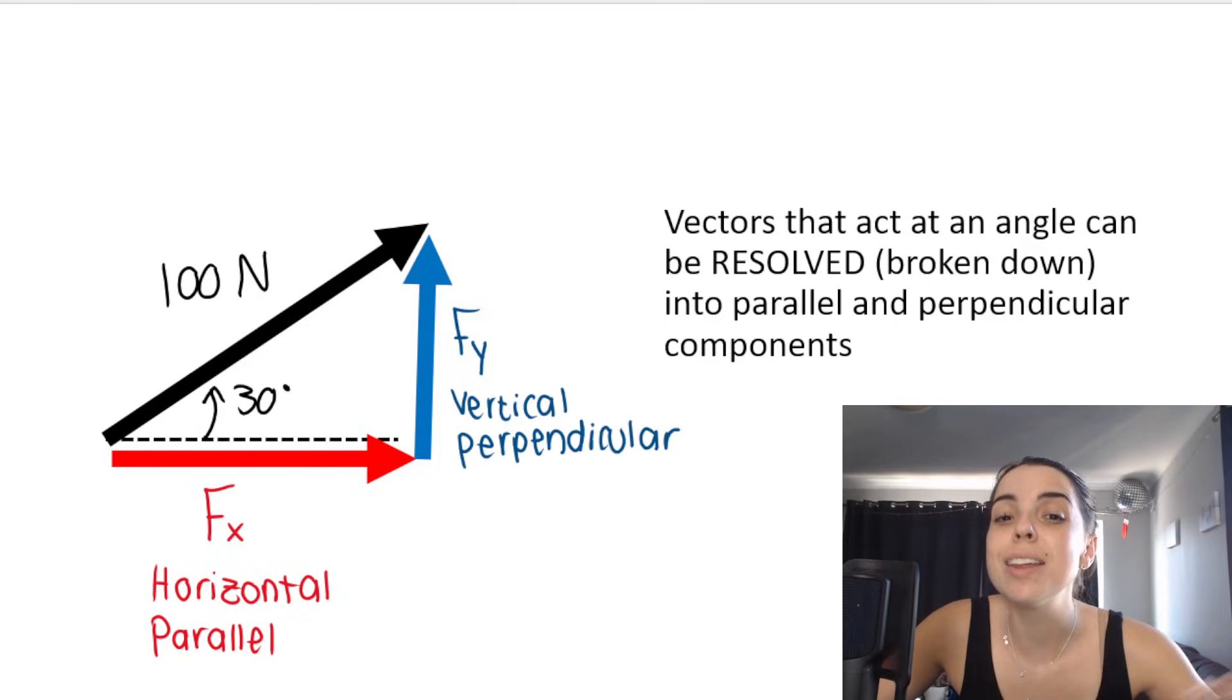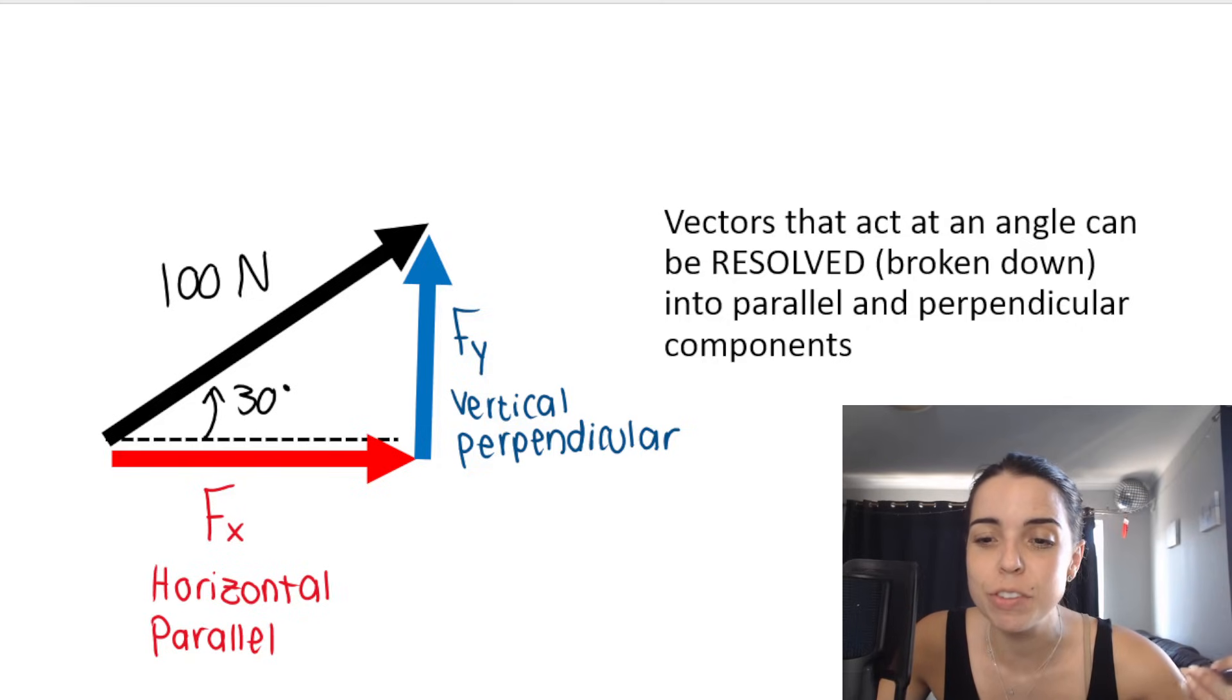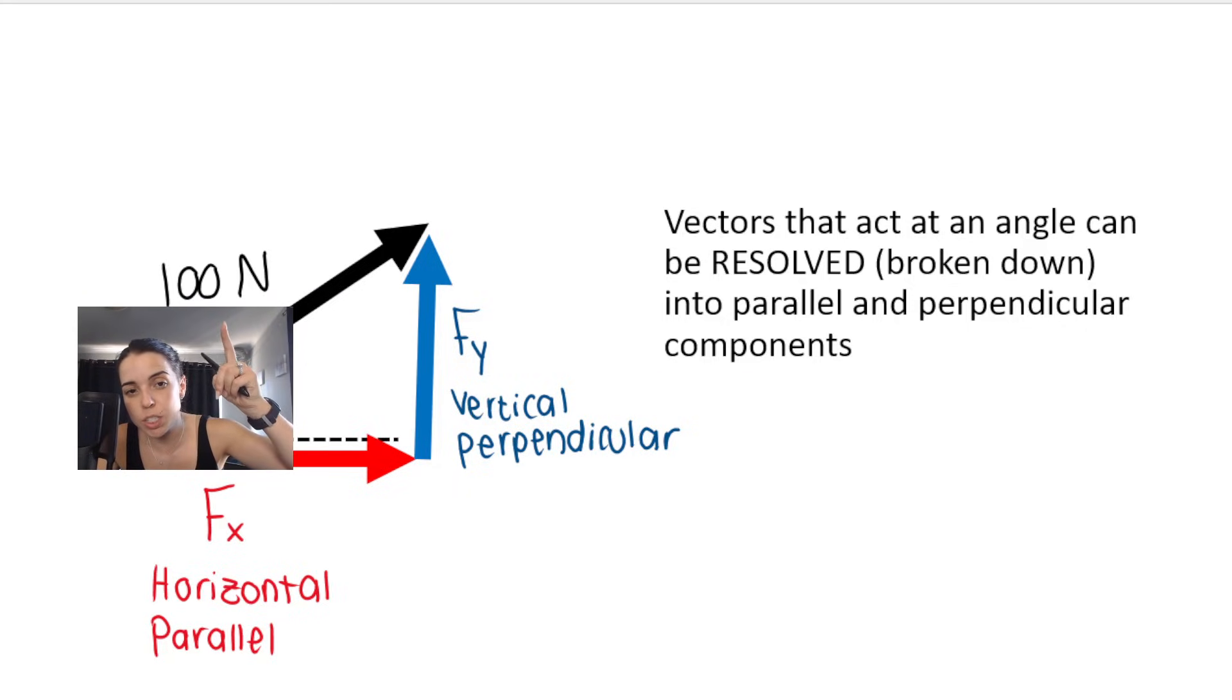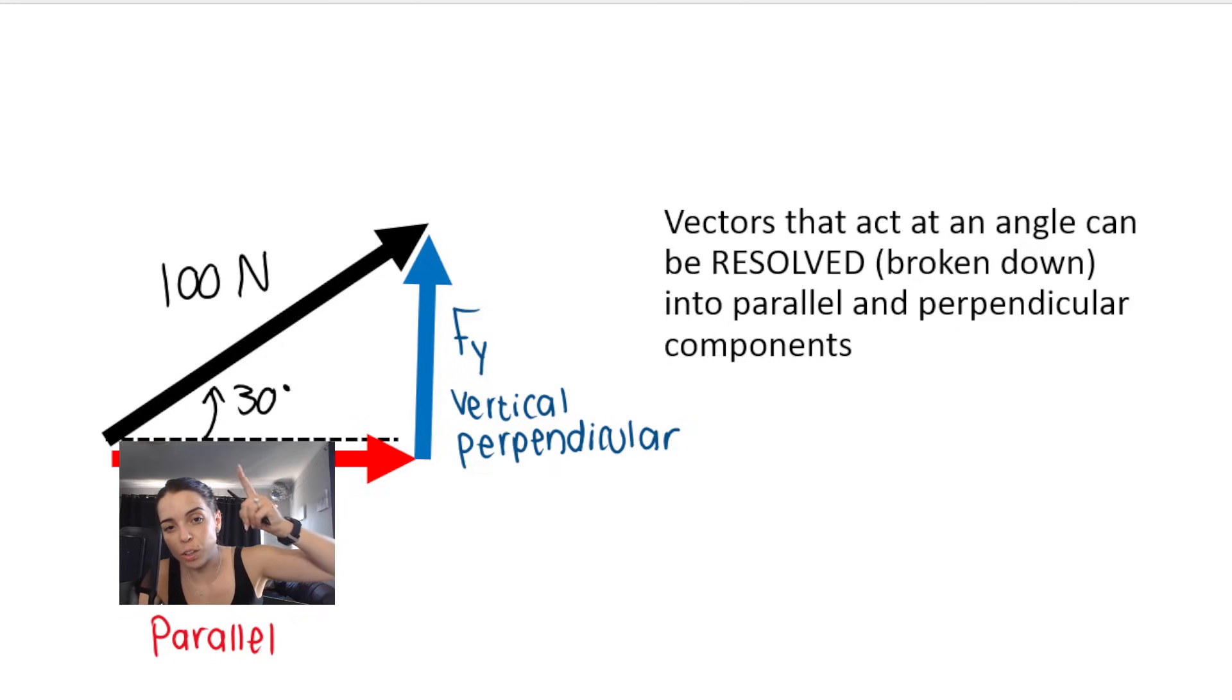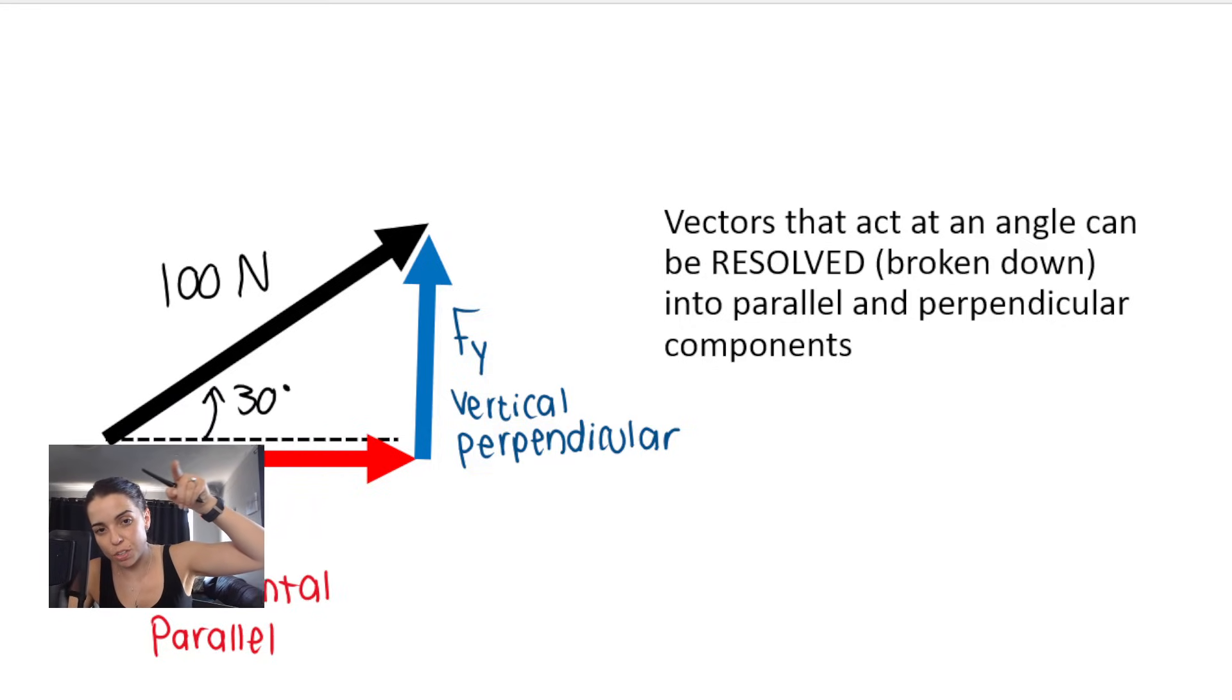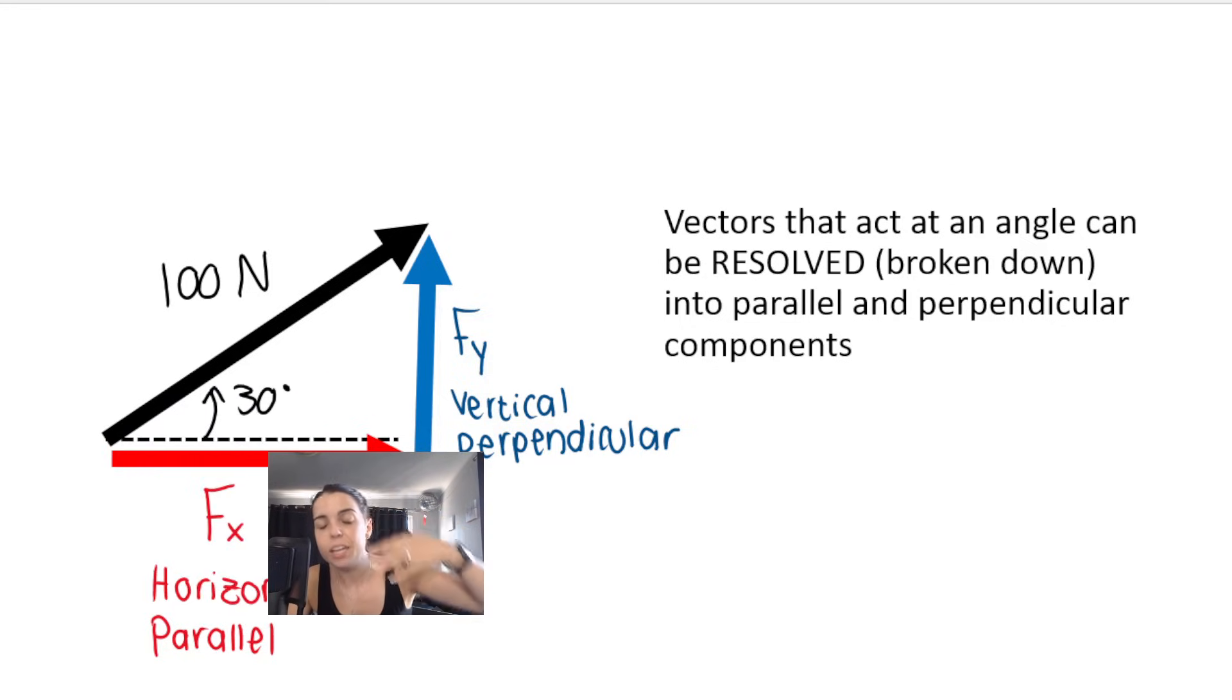What I've now done is I've given the vector a magnitude, a size. As you can see, I've made the size of the vector 100 Newtons, and it's acting at an angle of 30 degrees, anticlockwise from this horizontal line.